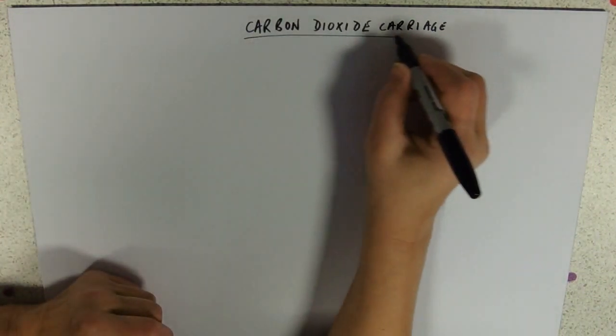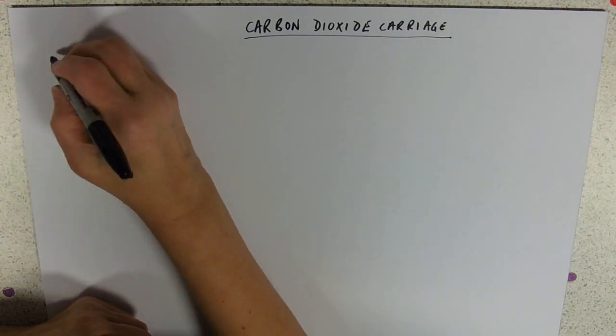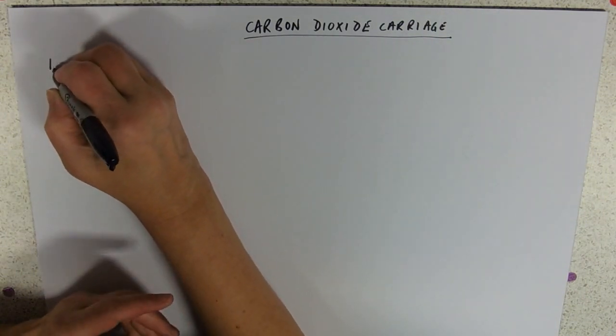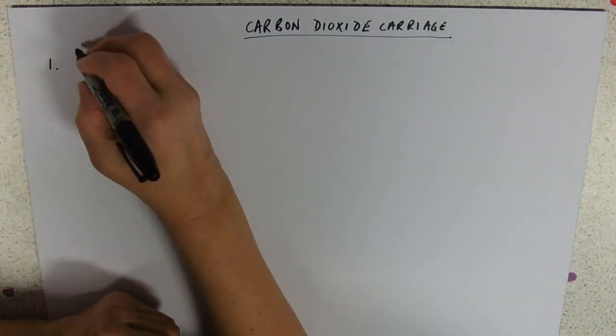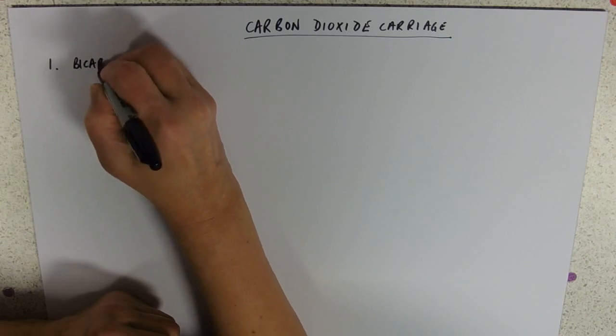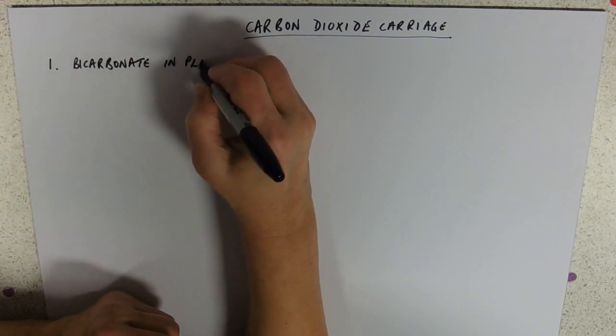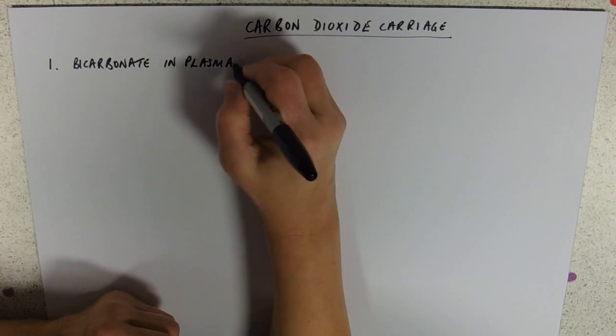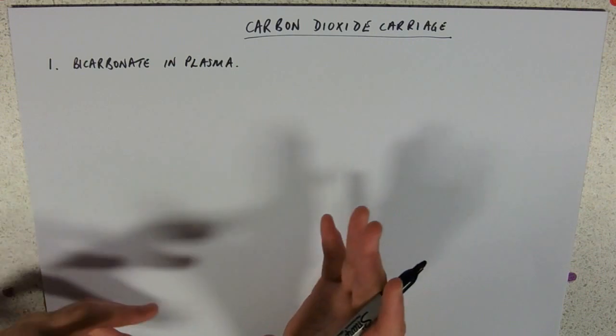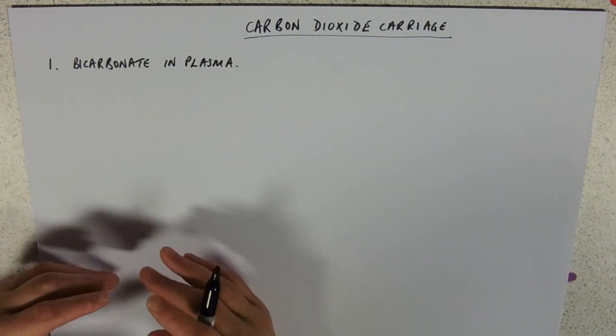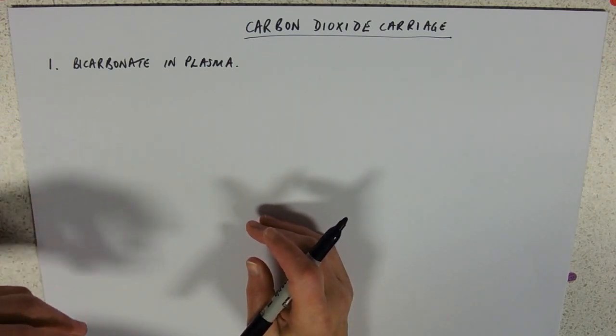So carbon dioxide carriage, what we're talking about here is there are three ways in which carbon dioxide is carried and the biggest way in which carbon dioxide is carried is as bicarbonate ions in plasma. So this is why at GCSE you were taught that oxygen is carried in red blood cells and carbon dioxide is carried in plasma, but it's not quite as simple as that because you've got to get the bicarbonate made and into the plasma.